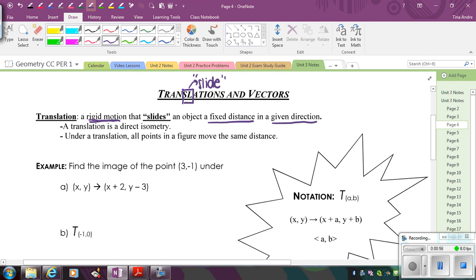A translation is also called a direct isometry, which means, again, isometry, it'll stay congruent, same shape, same size. When you do a translation, direct means that the orientation will stay the same.